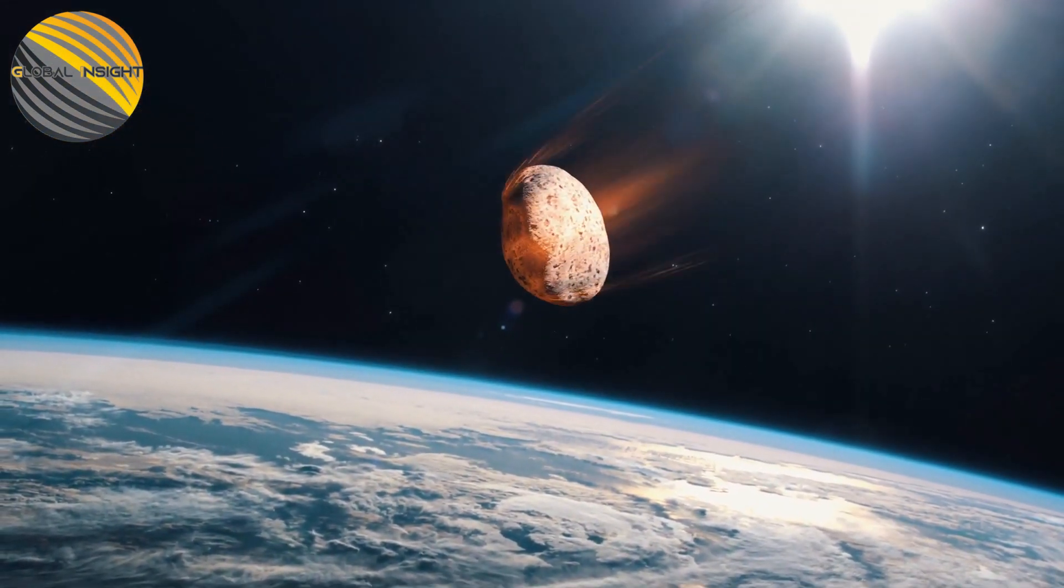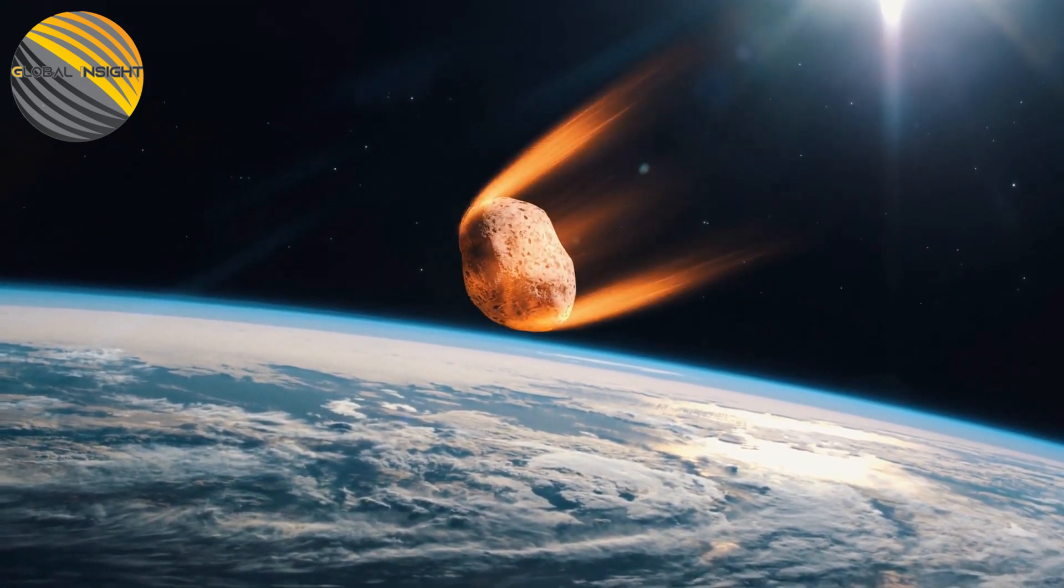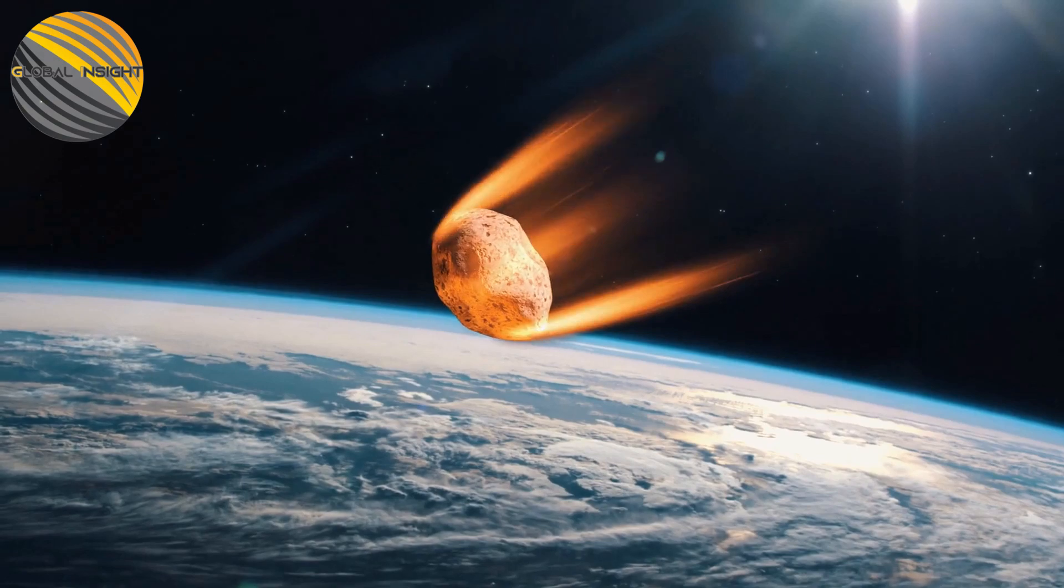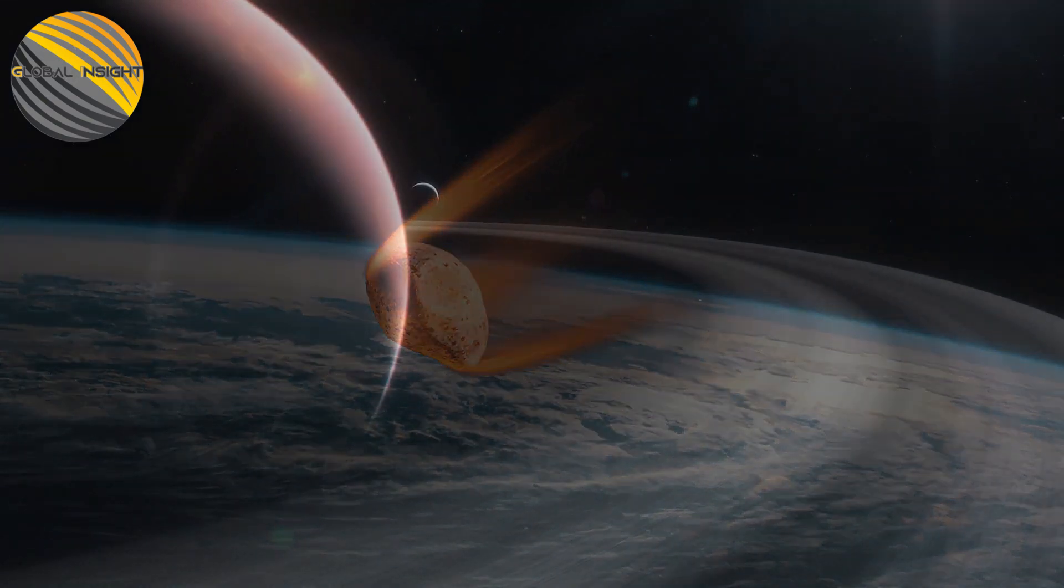The first one exploded off the southern coast of Puerto Rico, while the second one crashed into the ground close to where Botswana and South Africa meet. Fortunately, those small asteroids did not cause any harm.